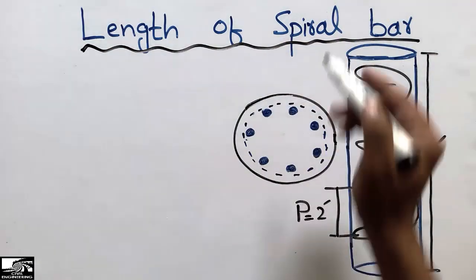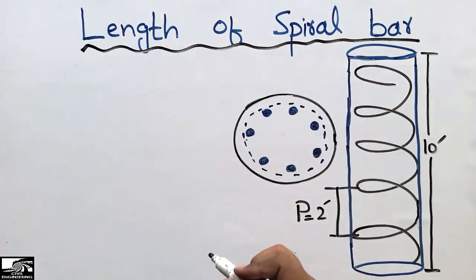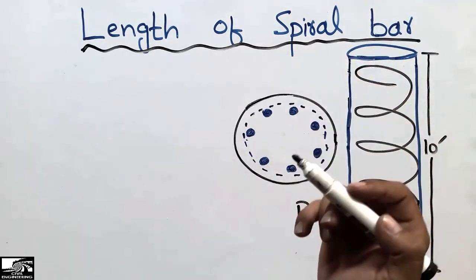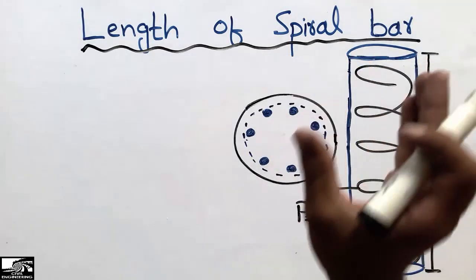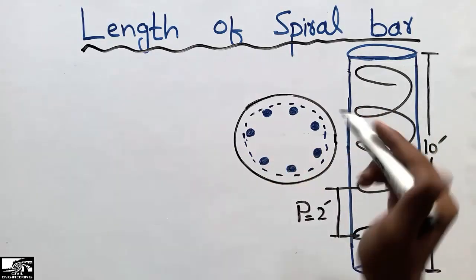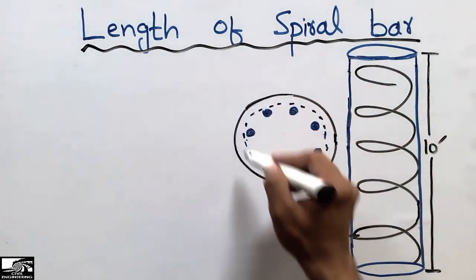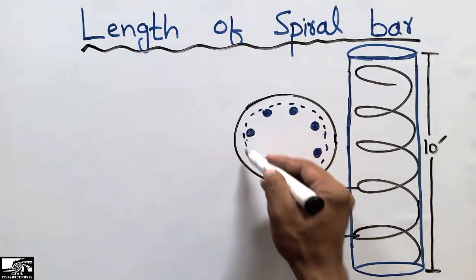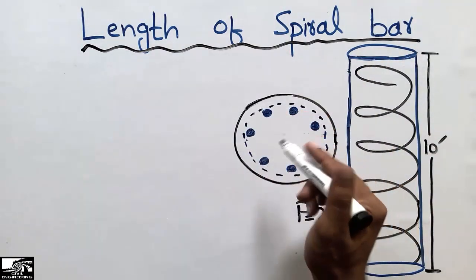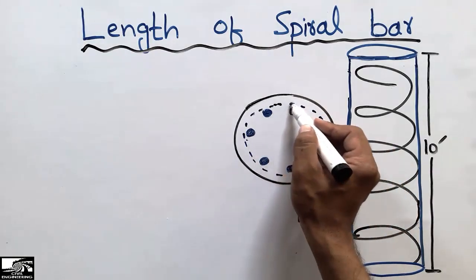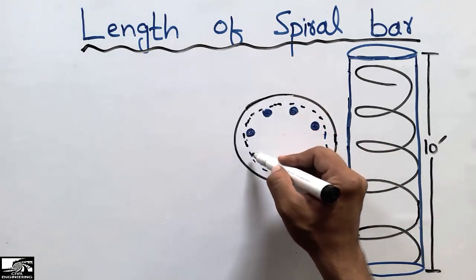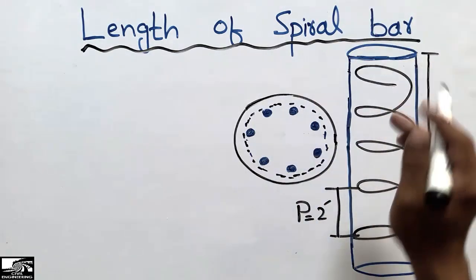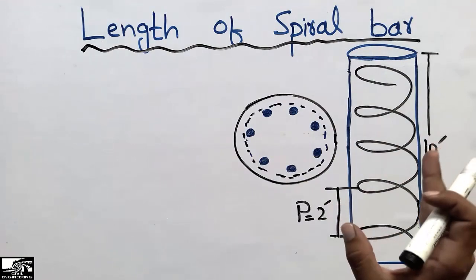The spiral bar is also known as transverse reinforcement. It is used in the case of the circular column. In the case of beams we call this type of transverse reinforcement stirrups, while in the case of rectangular columns we call it ties. In a circular column, the transverse reinforcement used to hold the main bars is known as spiral reinforcement, or a spiral bar.